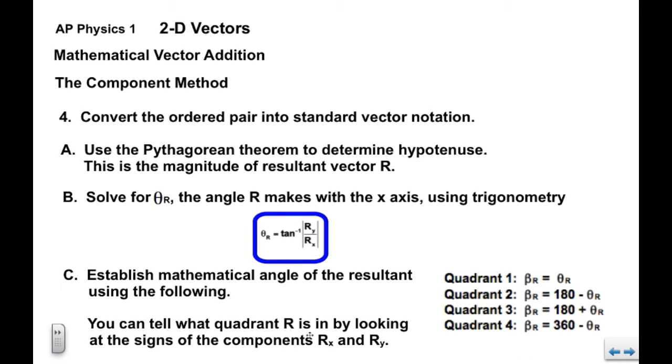Now you can tell what quadrant r is in by looking at the signs of the components rx and ry. If they're both positive, r is in quadrant one.